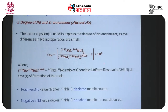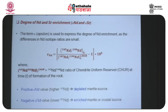Similarly, when we have a negative εNd — lower 143Nd — it comes from an enriched mantle or crustal source, because 143Nd is relatively depleted in the crust relative to the bulk earth (CHUR).